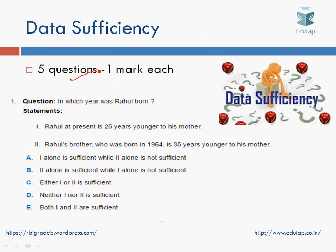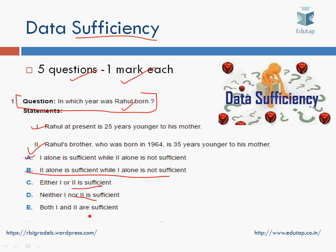There were five questions worth one mark each — five marks total — on data sufficiency. In this type of question, you select an option based on two statements. For example: in which year was Rahul born? If statement one alone is sufficient while statement two alone is not, you tick A; similarly B, C, D, or E depending on whether two alone is sufficient, either one is sufficient, neither is sufficient, or both are needed.